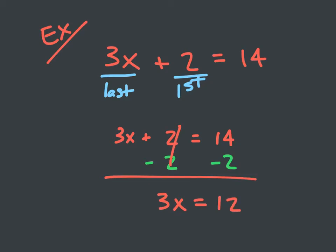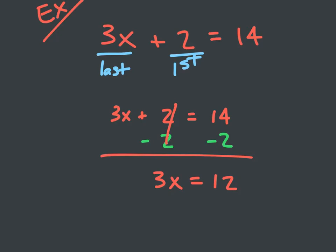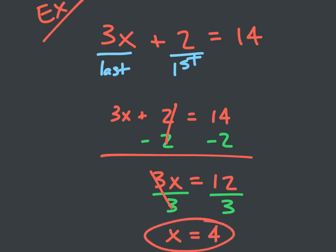Now I have just a one-step equation. That was my first step — subtracting two — and now I have my second step. Hence the name two-step equations. From here, I'm going to divide both sides by three, since that's the opposite of multiplying by three. Three divided by three divides out to one, so I'm just left with x, and 12 divided by three is four.